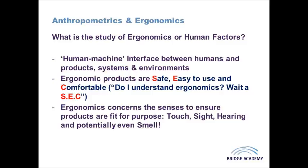In terms of products, we might be considering things like the grip on a toothbrush, or the interaction between you and a computer mouse. In terms of systems, it might be the processing of a product through a manufacturing plant, or perhaps in a production line to ensure that is done in the most efficient way. In terms of an environment, we might be concerning ourselves with things like a kitchen environment, where you'd be considering working triangles.